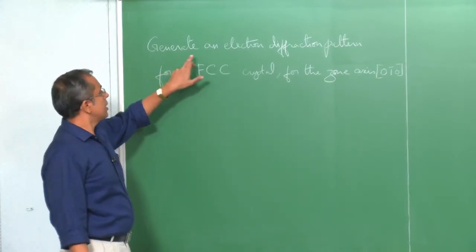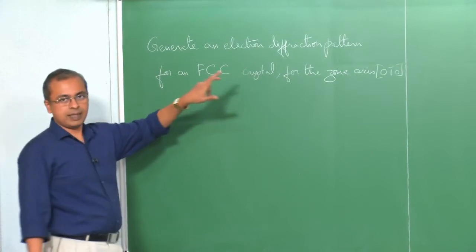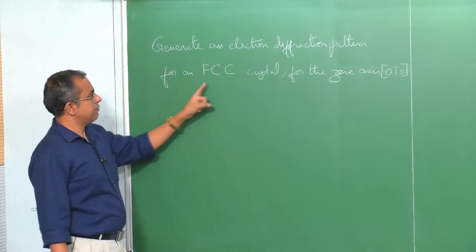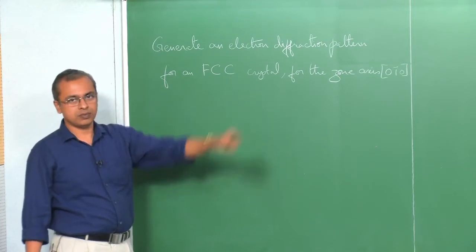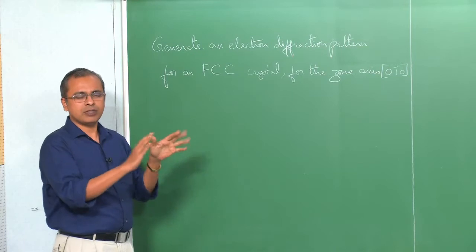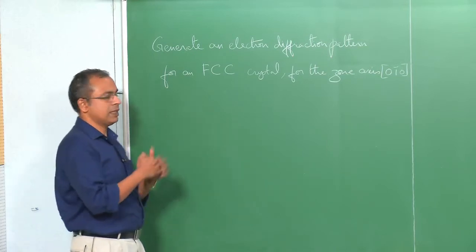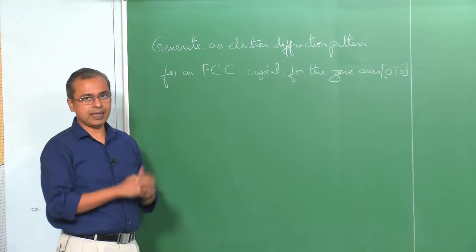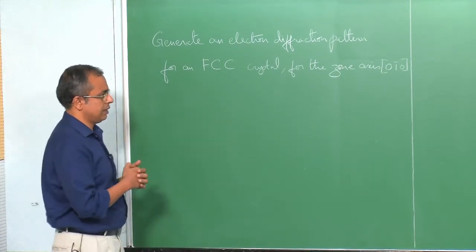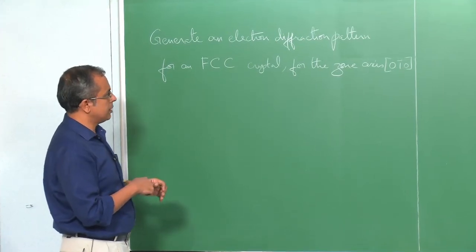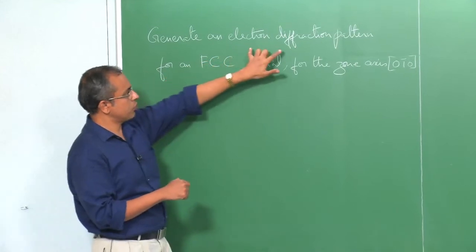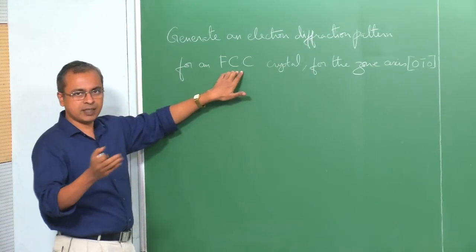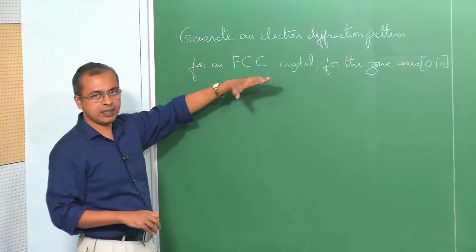The question is this: we want to generate an electron diffraction pattern — in this case a spot pattern because we will assume it is a single crystal — for an FCC crystal for the zone axis [0, 1̄, 0]. There are a lot of things specified here. First, I am talking of electron diffraction; second, FCC means face-centered cubic crystal; and the third thing of importance is the concept of a particular zone axis.